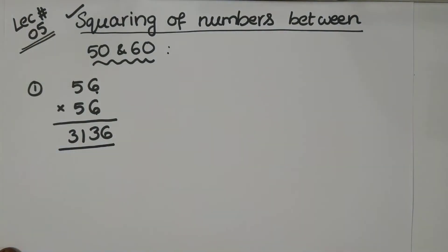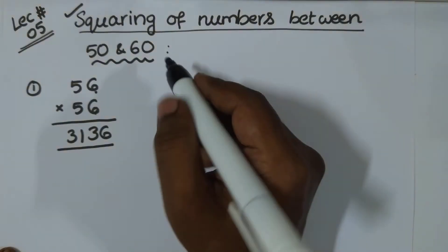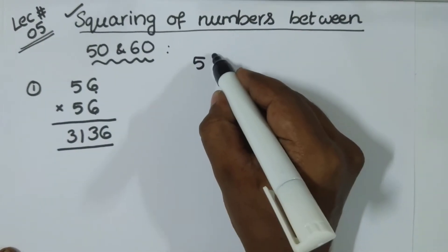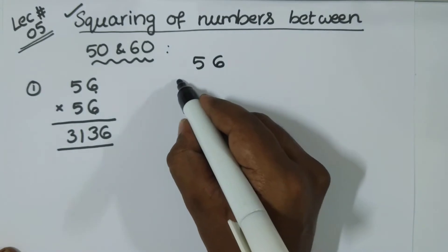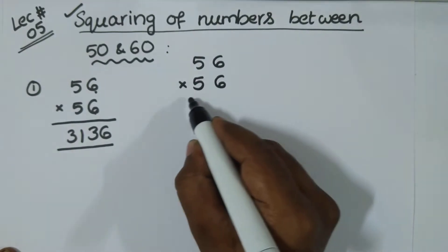3, 1, 3, 6. How come? You see. You can take it like this. 56. Again I am writing here. Multiply it by 56.